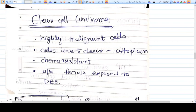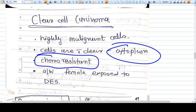Clear cell carcinoma is a highly dangerous, very malignant tumor with clear cytoplasm cells rich in glycogen. It's chemo-resistant, so chemotherapy is not an option. It's associated with females exposed to diethylstilbestrol in their intrauterine life.